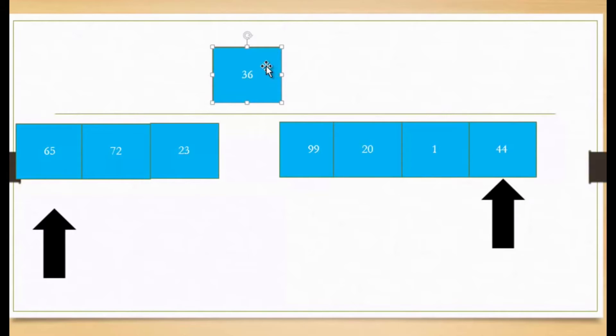So I'm going to choose 36. And now since 36 is the pivot point, I'm going to look at the top and bottom of the array, which these two arrows are pointing to.